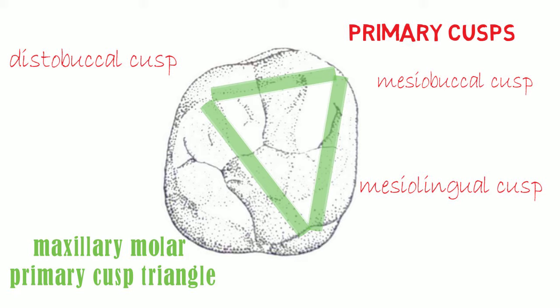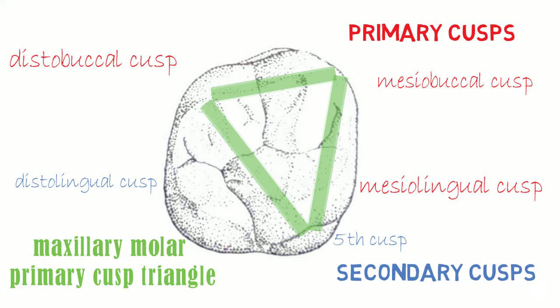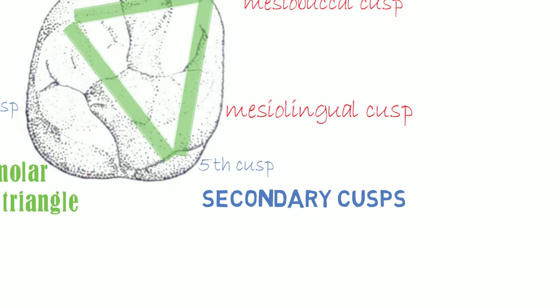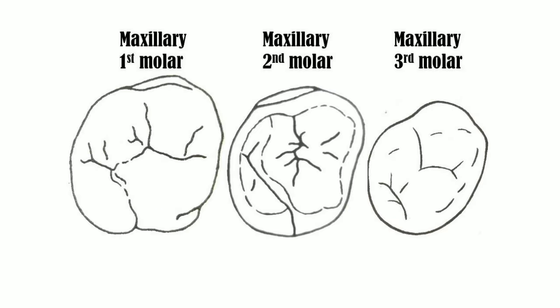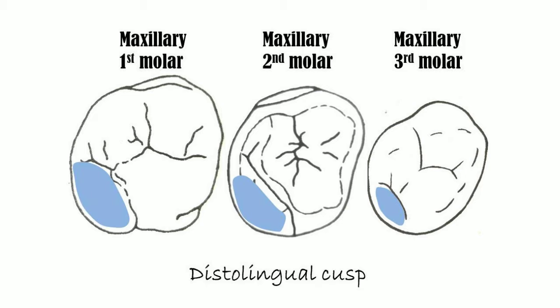The distolingual cusp and fifth cusp are the secondary cusps. As we move from the maxillary first molar to the maxillary third molar, the distolingual cusp becomes smaller and smaller.